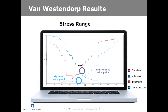The optimal price point, or OPP, is defined as the price point at which the number of respondents who reject the product as too expensive equals the number who reject it for being too cheap. Optimal refers to the fact that there is an equal trade-off in extreme sensitivities to price at both ends of the spectrum. Optimal should not be taken to imply that it is the ideal price. The stress range — between the IPP and OPP — can be seen as the relevant range of prices for your product. These points and ranges should be viewed as directional information for pricing decision making, as opposed to concrete price limits.